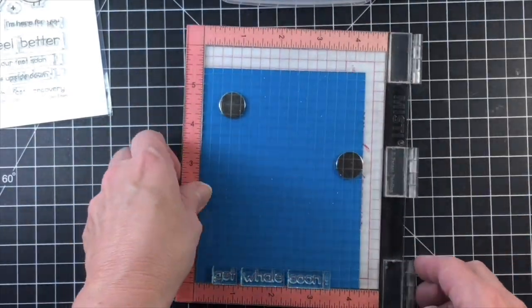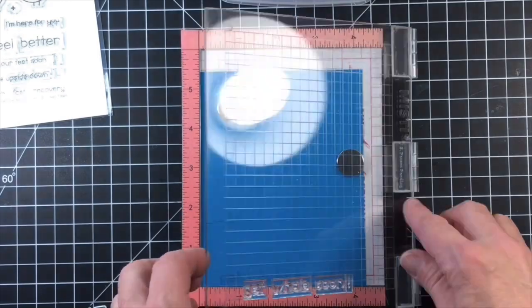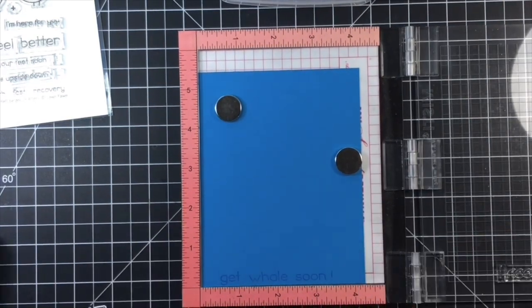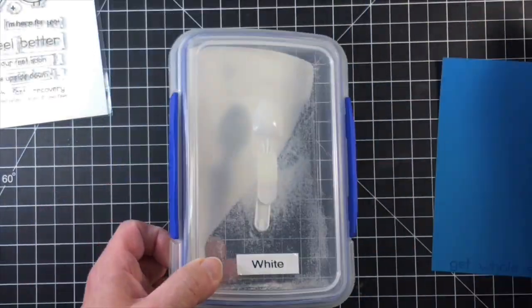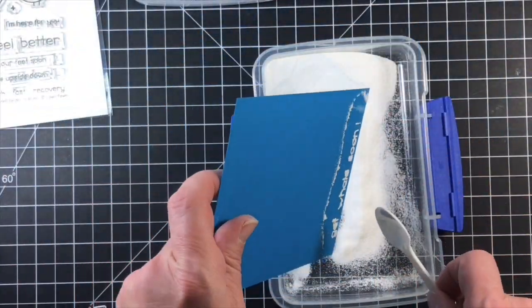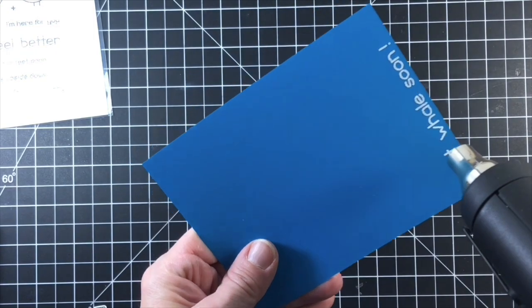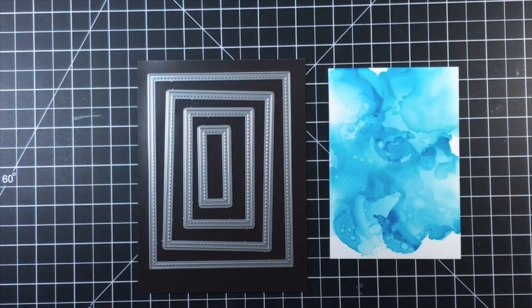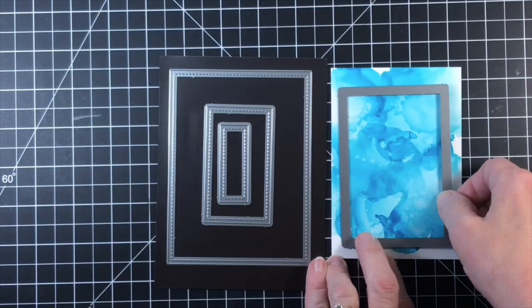Next I stamped and white embossed the sentiment from the set with coordinating cardstock. I made sure I rubbed my embossing buddy all over the cardstock first so I didn't get little flecks of embossing where I don't want it. When you're using a bold color of cardstock you really want to prep that area first so the powder doesn't stick where you don't want it to.